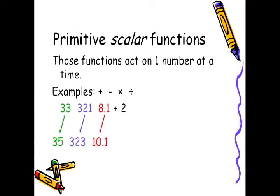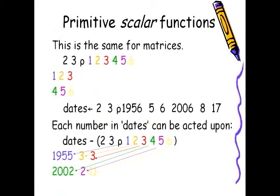There is also the notion of scalar functions. These functions act on one number at a time. For example, you see three numbers plus two — each number is added one by one. So you have three numbers, you add one to each, you get three numbers. It's the same for matrices — they act on one number at a time.